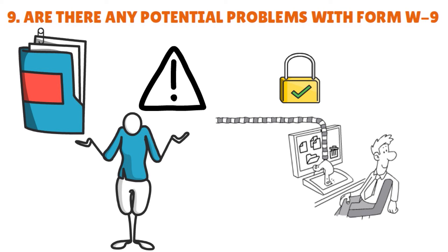There could also be a situation where you expected a Form W-4 instead. If you are starting a new job and your employer hands you a W-9, ask whether you'll be working as a self-employed independent contractor or as an employee, because the distinction is very important. Employees complete Form W-4, not Form W-9, to set their tax withholdings. You are generally not considered an independent contractor if your employer controls when, where, and how you do your job, when and how you are paid, and if the job provides any sort of employee benefits.